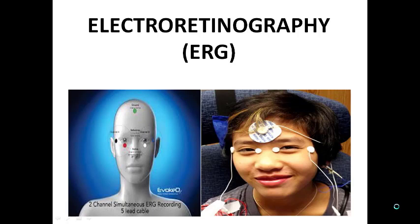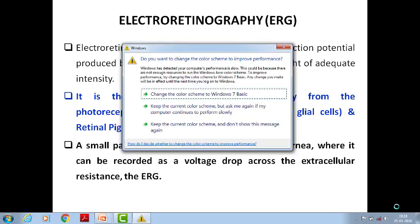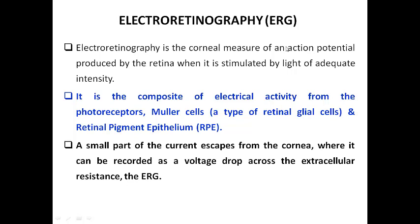Today we are going to discuss two topics of biomedical instruments related to the ophthalmology field. The first one is electro-retinography, in short ERG. Electro-retinography is used to measure the electrical potential produced by the retina when it is stimulated by light of adequate energy. The electrical activity of the retina is composed of activity from photoreceptors, Müller cells, and retinal pigment epithelium layers. A small part of the current escapes from the cornea where it can be recorded as a voltage drop across the extracellular resistance, named as ERG.